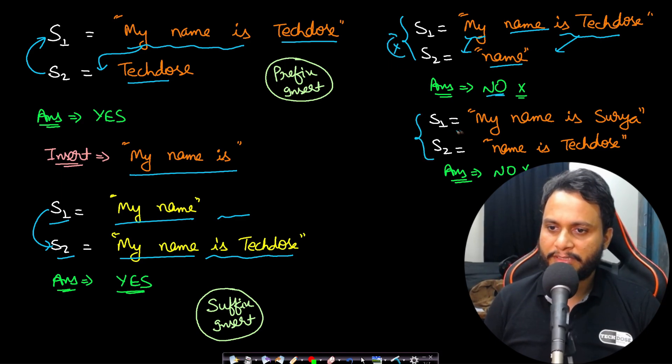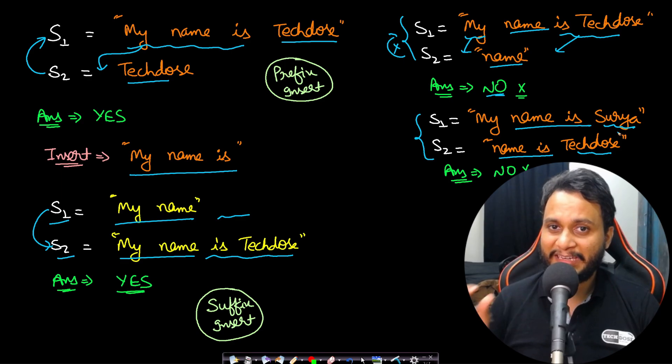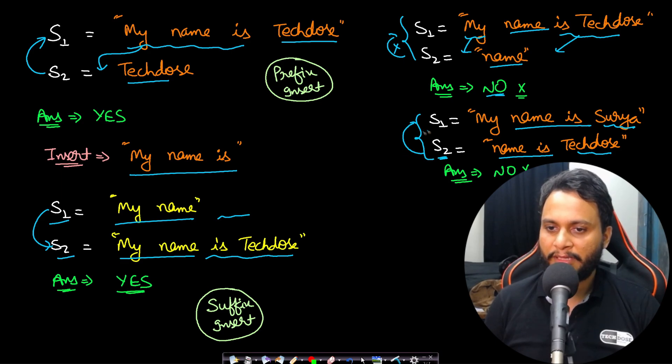Let's look at another example. S1 is 'my name is Surya' and S2 is 'name is TakeDose'. Name is already present, but then Surya and TakeDose are two different words and they are not matching. There should not be any word in a smaller string which is not matching with the larger string. In such a scenario, we will say that we cannot make the smaller string equal to the larger string by any insertion because in this case it requires deletion of a word. So this is not possible.